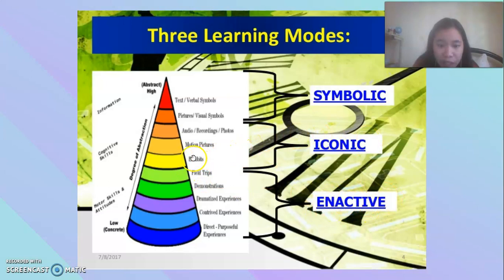For the iconic level, there are exhibits, motion pictures, audio recordings, and pictures. And for the symbolic level, we have visual symbols, text, and verbal symbols.